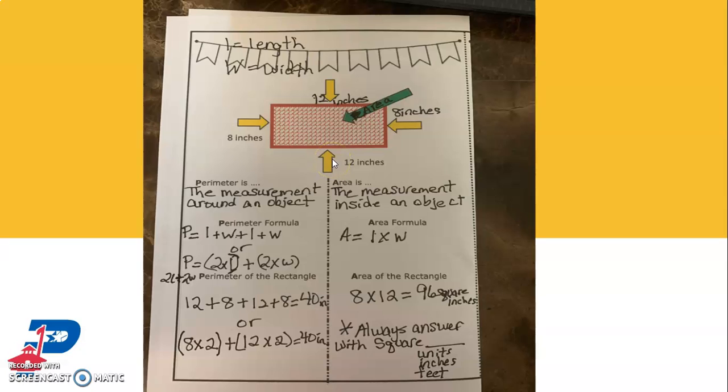And if I multiply 8 times 12, I'm going to get 96. Now here's something really, really important about area. You need to make sure that you do it, that when you answer it, so 8 times 12 is 96, it's 96 square inches. Always use square.